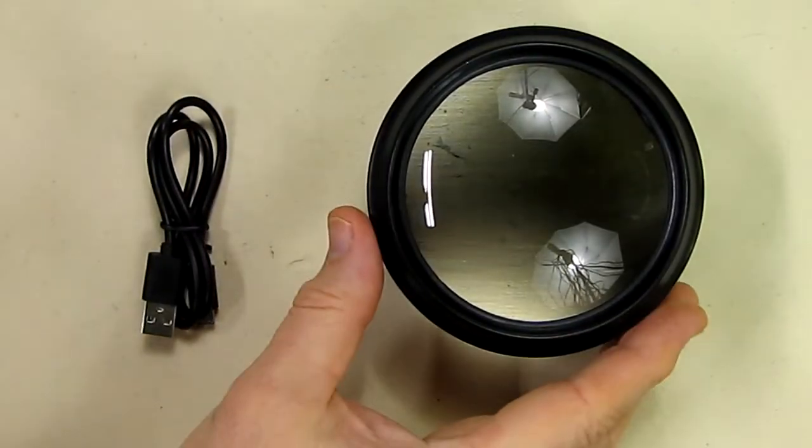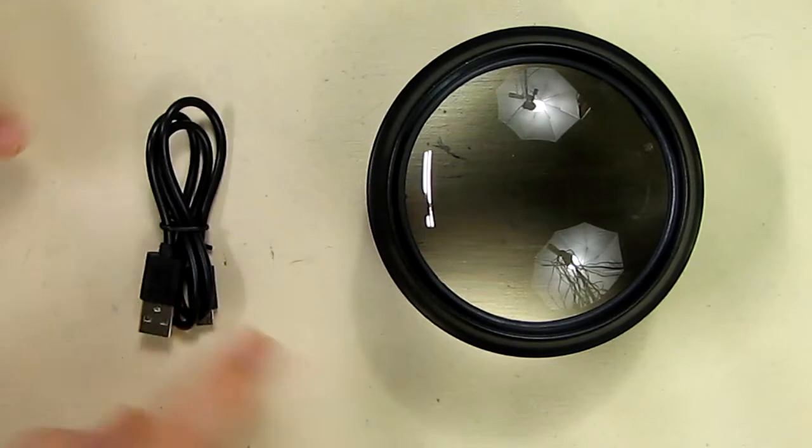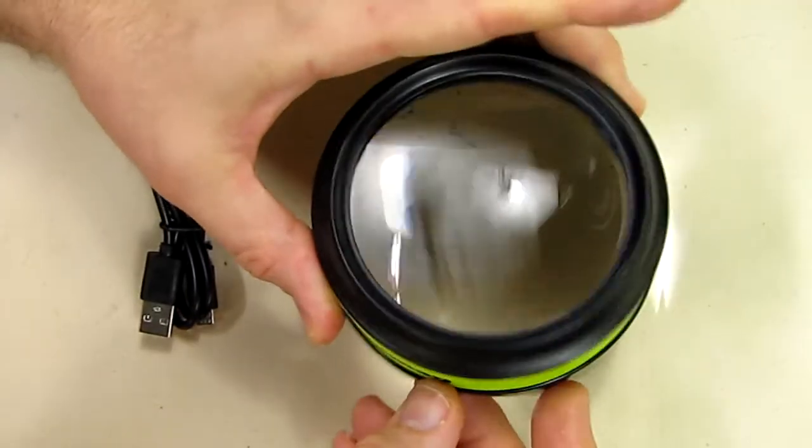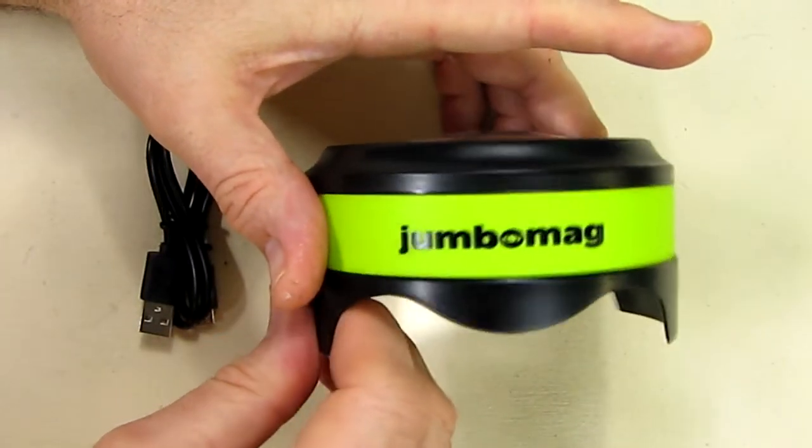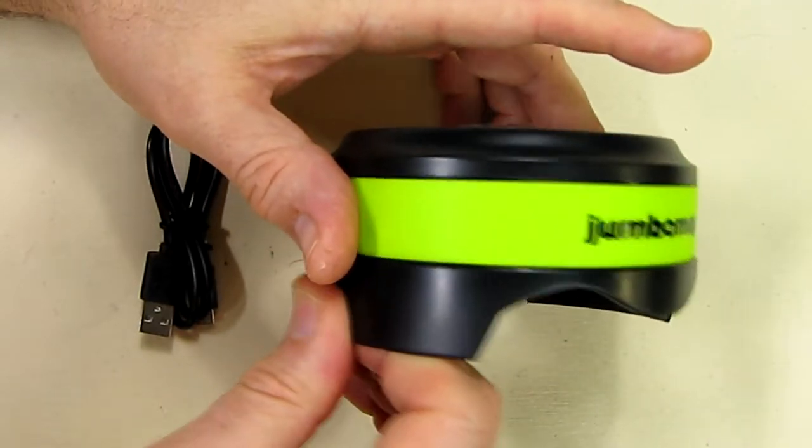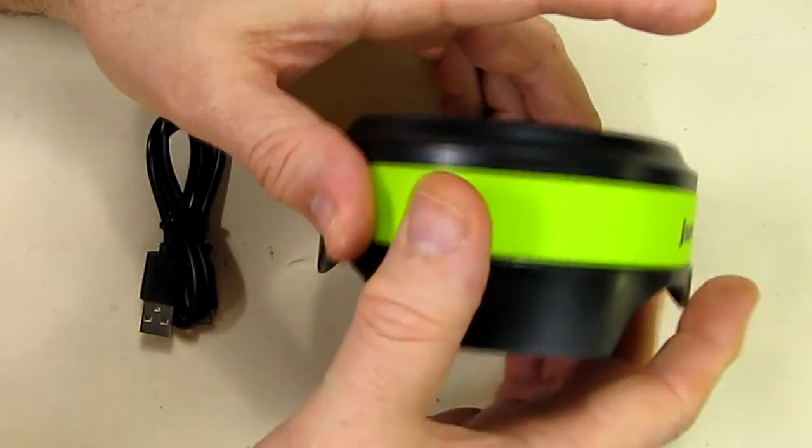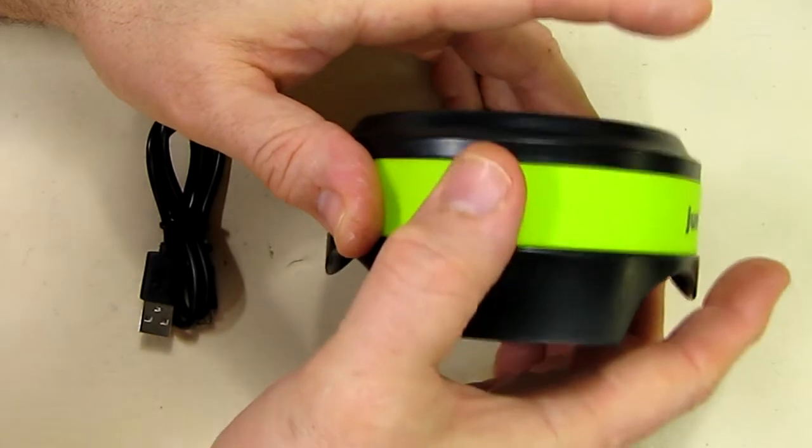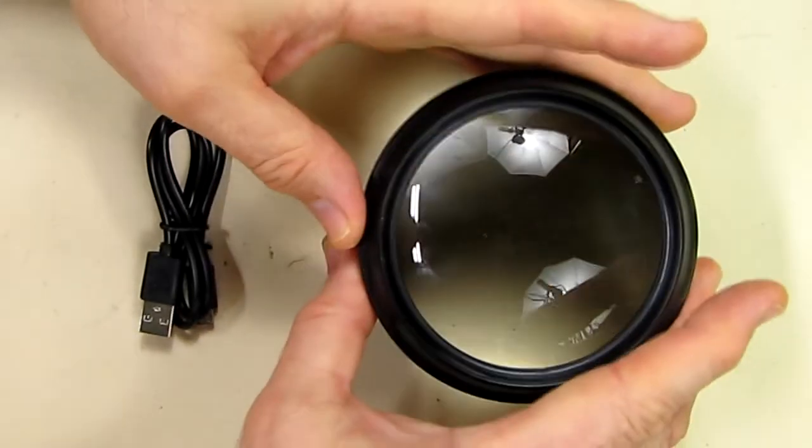So this is the unit itself and this is the charging cable. I'll show you the side view right here. It's got a neat looking, almost fluorescent looking green, and it has a rubberized feel to it so that it has very good grip quality.